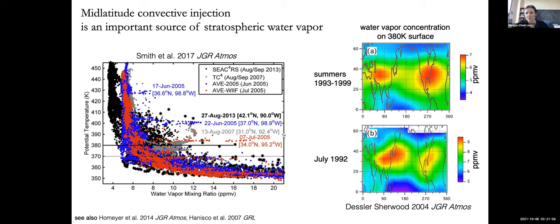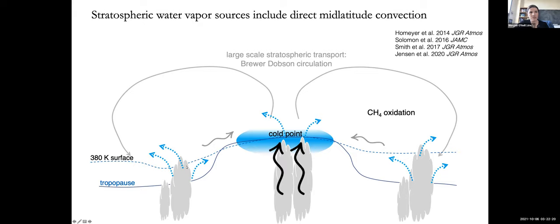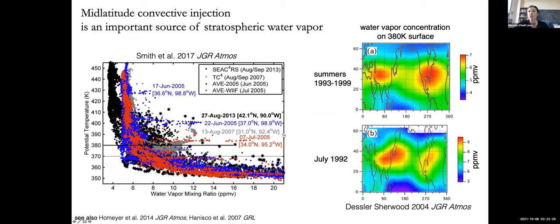Looking at a satellite-derived map of water vapor at the 380 Kelvin surface — the boundary between the middle world and the overworld of the stratosphere — we can see two substantial hotspots. Sampling over the North American continent is a unique location in the Northern Hemisphere, along with a hotspot over the Asian continent. This is particularly pronounced in summer, which is our storm season when deep, well-organized supercell thunderstorms are most frequent.